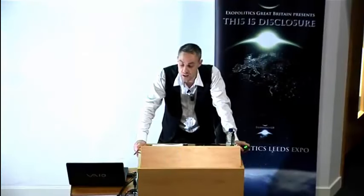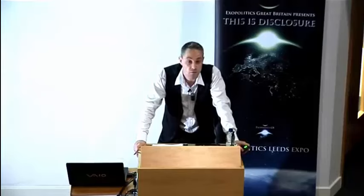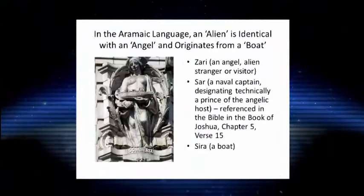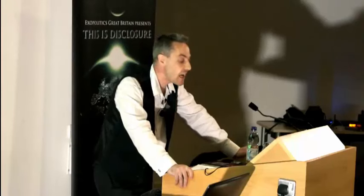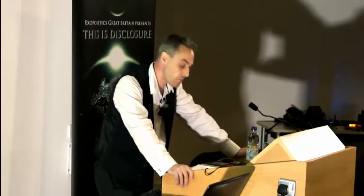Yahweh Seboeth, the Lord of the Host, is referred to as a prince or a captain of the naval host. We find references for this in the book of Joshua, chapter 5, verse 15. Etymologically, zarian — an angel or an alien — is interrelated with sira, which is a boat. So these entities actually originate from a type of vessel or boat.